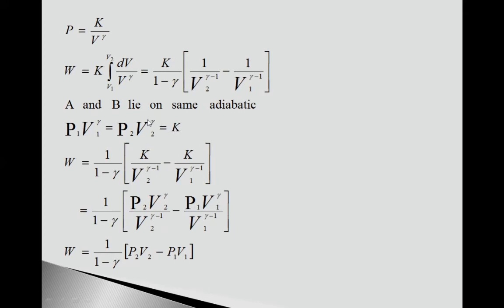So put first P2V2^γ here. Here P2V2^γ upon this V2^(γ-1) minus here P1V1^γ upon this V1^(γ-1).